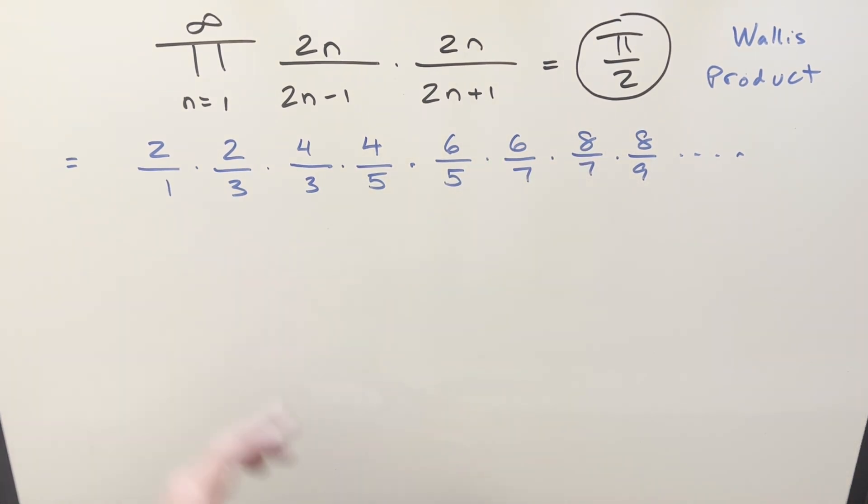And yeah, so basically, that's all there is to it. When you get something in this pattern, just know it's Wallis product and it's pi over 2. Okay, that's it for today. Thanks everyone for watching. Have a good day.